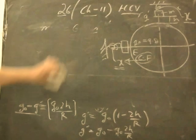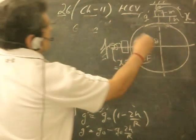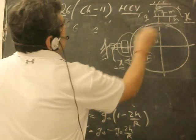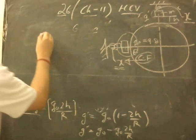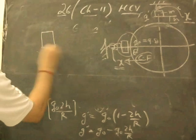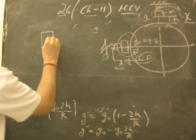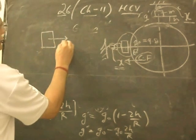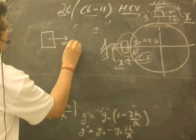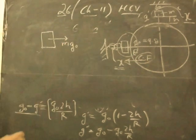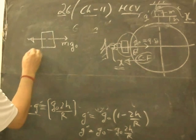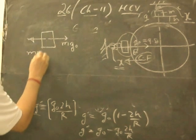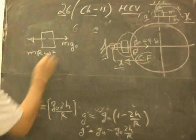Now let us write the force equation for this situation. Let us have a free body diagram. What is the force acting towards the center? It is mg₀ towards the center of the earth. Then the centrifugal force will be radially outwards: mRω².